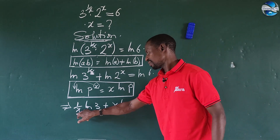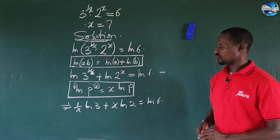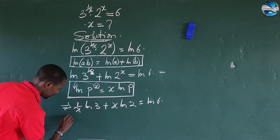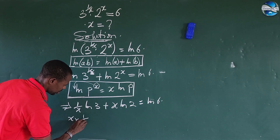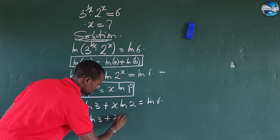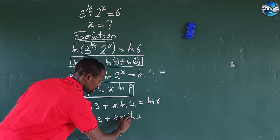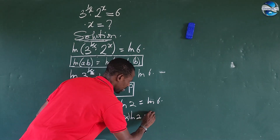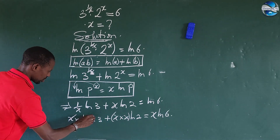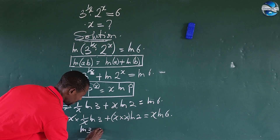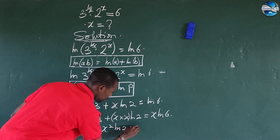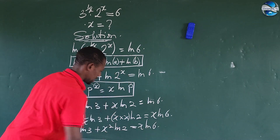To eliminate this fraction, we multiply through by x. Multiplying every term by x gives us: x times (1/x) times ln(3), plus x times x times ln(2), equals x times ln(6). This simplifies to ln(3) plus x squared times ln(2), equals x times ln(6).